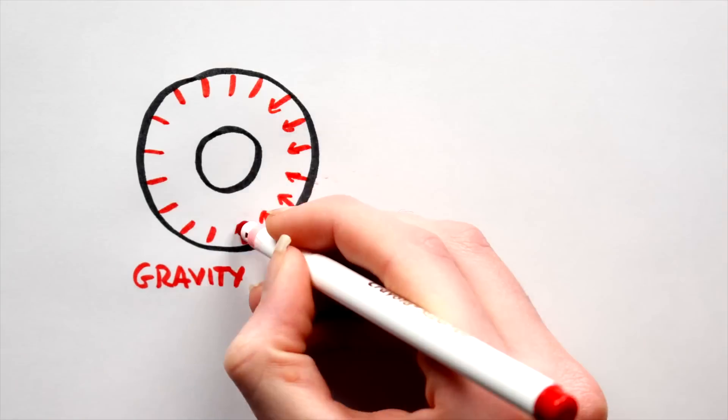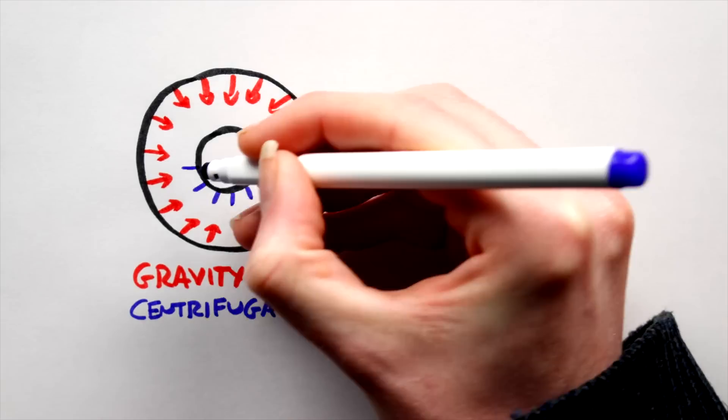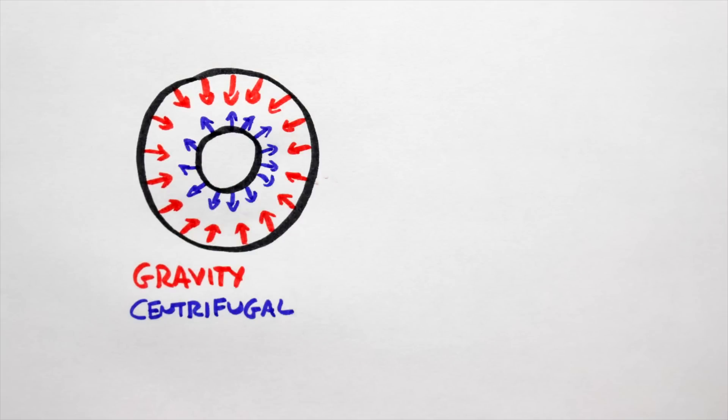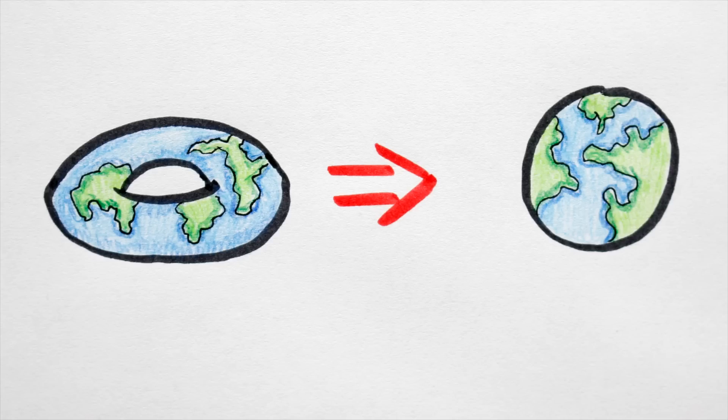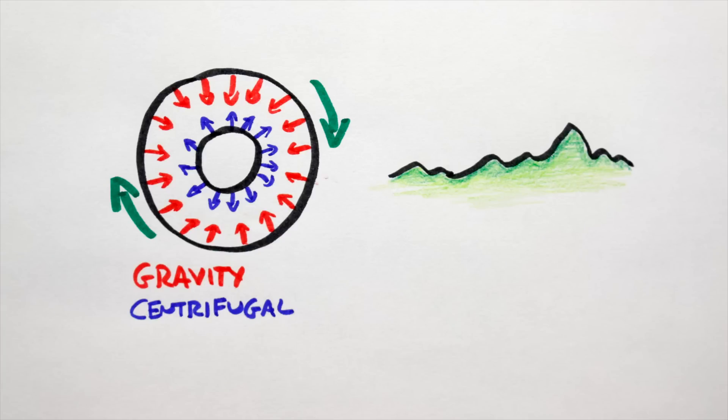See, gravity causes matter to collapse inwards, while centrifugal forces would pull matter outwards. So if a donut world had a very high rotation rate, the centrifugal forces generated would balance out the force of gravity. This would ensure that the planet would remain stable and retain its toroidal shape—i.e., it won't collapse into a sphere. Now, the faster the rotation, the shorter the days. Days on a torus world would be no longer than a few short hours.